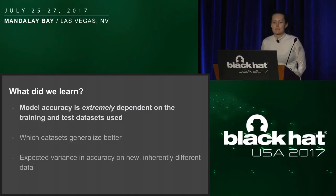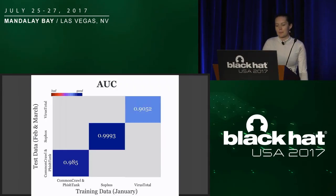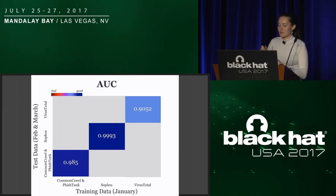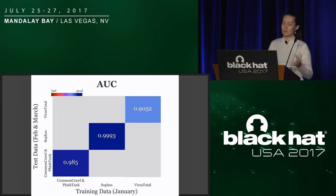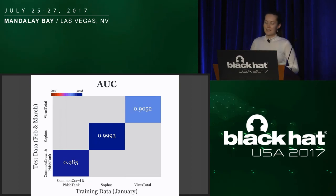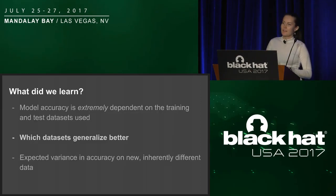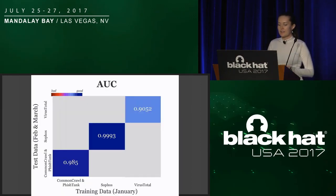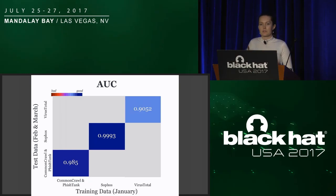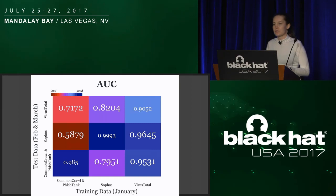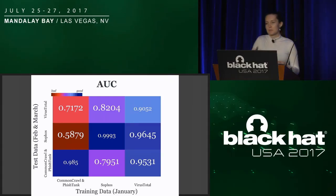What did we learn? Model accuracy is extremely dependent on the training and test data sets used. Even looking only at models trained and tested on their own data set, our AUC values still vary quite a lot from 0.9 to 0.999. And they vary way more if we're training on one data set and testing on another — the Common Crawl model got an AUC of 0.58 on Sophos data, which is pretty terrible. Second, we learned what data sets generalize better. If we had only looked at the same-source results before deploying, we probably would have deployed the Sophos model with its really high AUC. But because we ran this analysis, we learned the VirusTotal trained model tends to generalize better to other data sets. If we're unsure of our deployment data, I would put my money on the VirusTotal model.